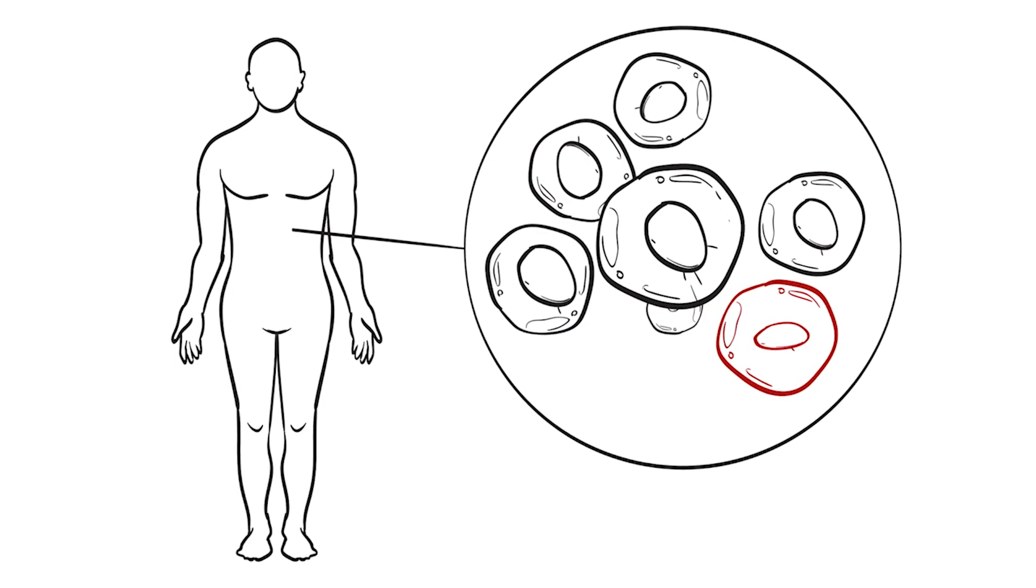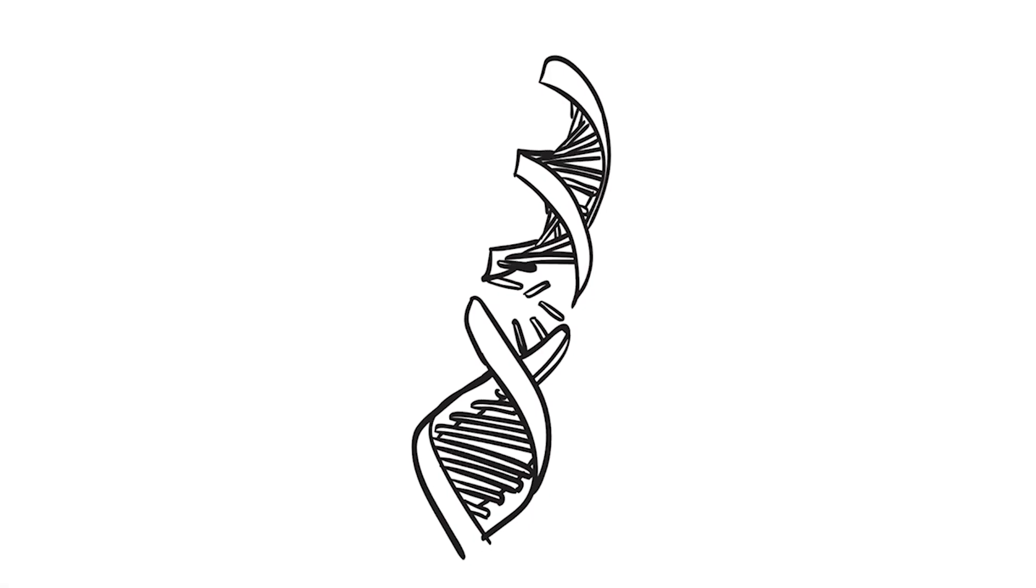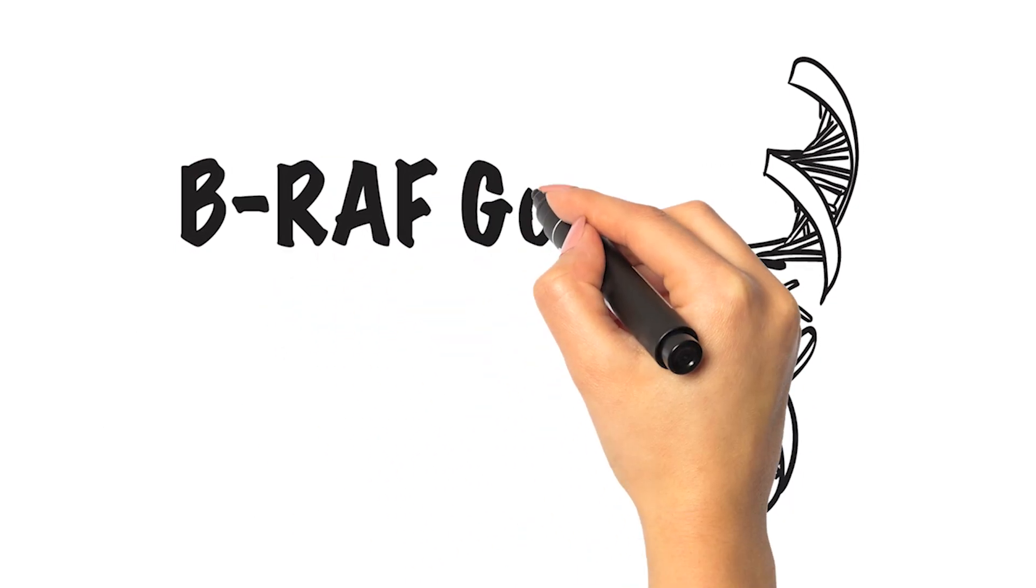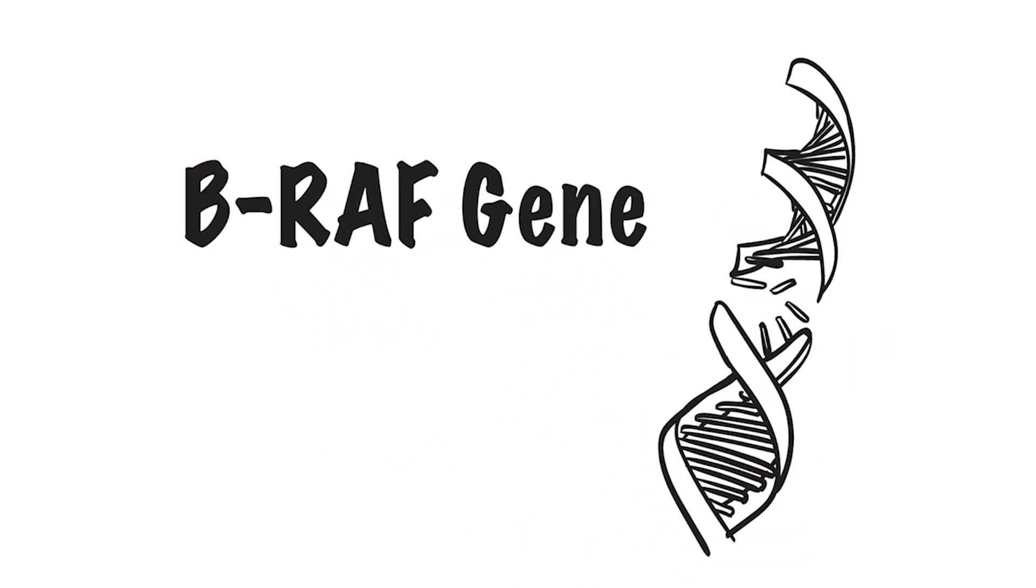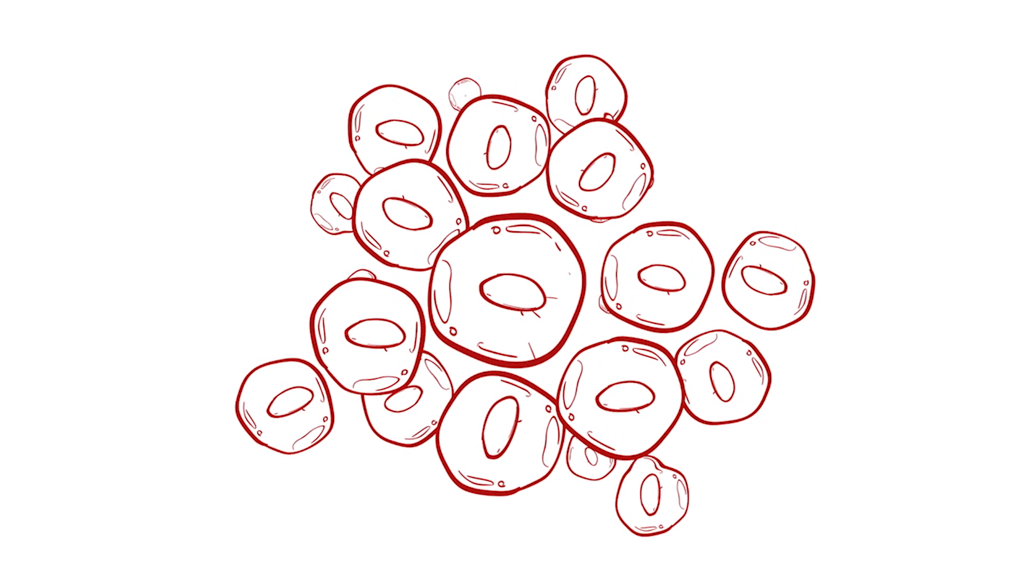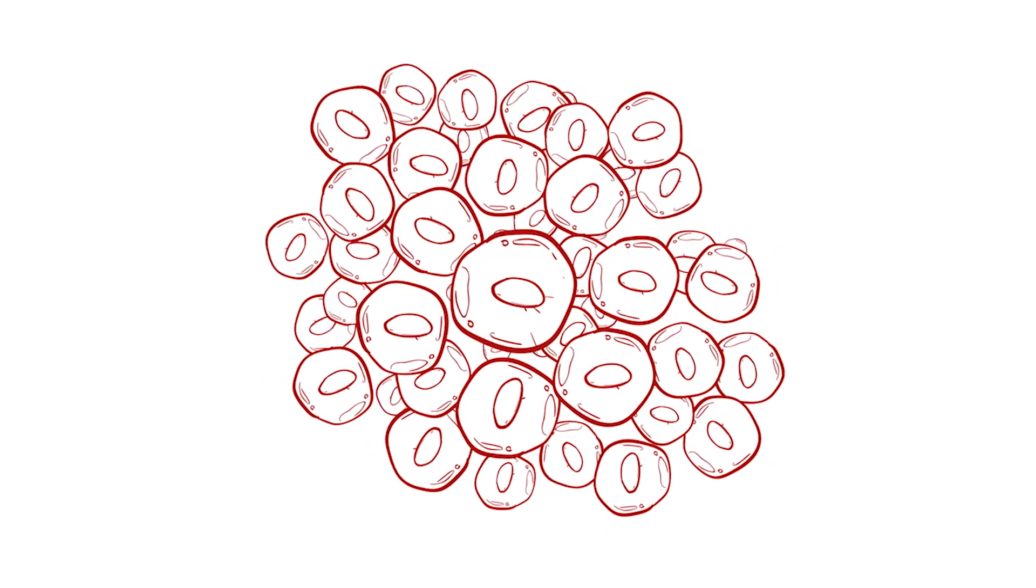But in melanoma, the cancer cells don't work properly. Normal genes like BRAF and a few others are broken or mutated, and these genetic mutations cause the cells to rapidly grow out of control. This is how melanoma can spread to other parts of the body.